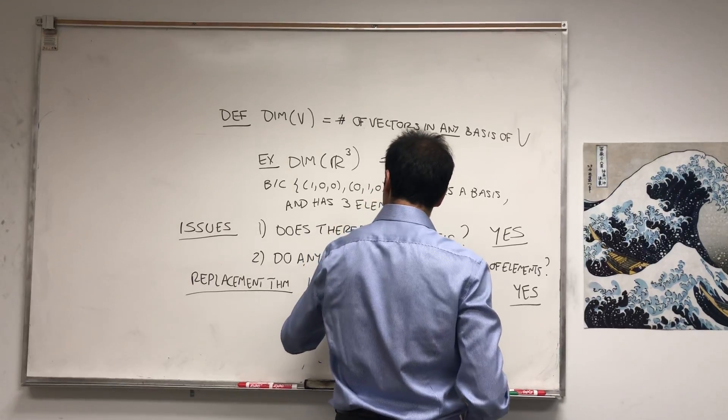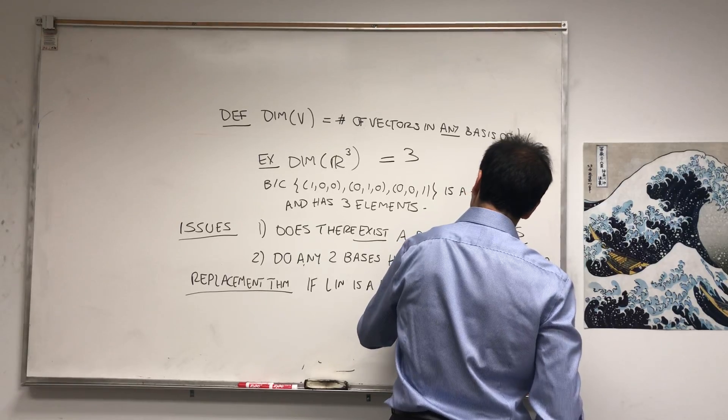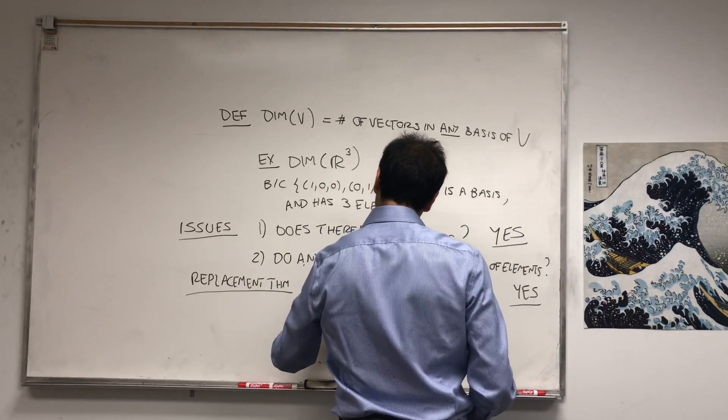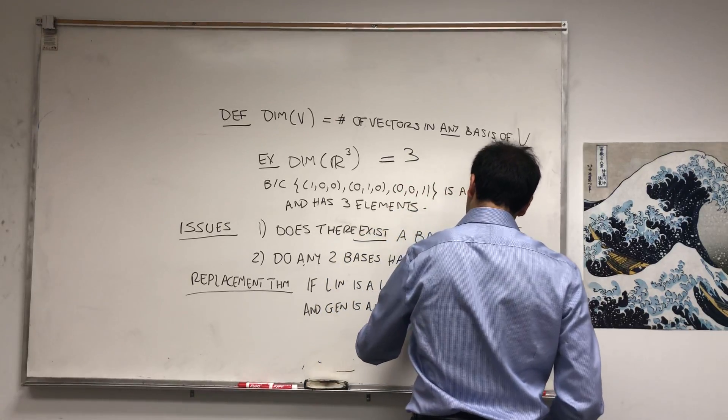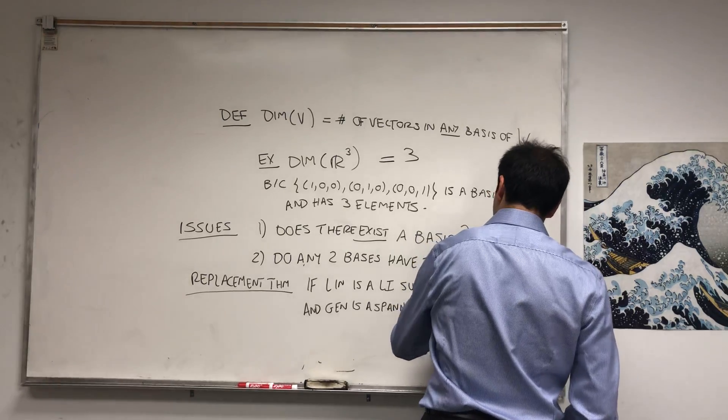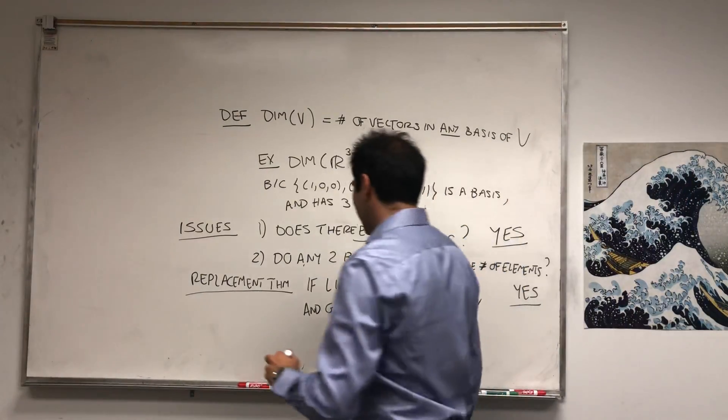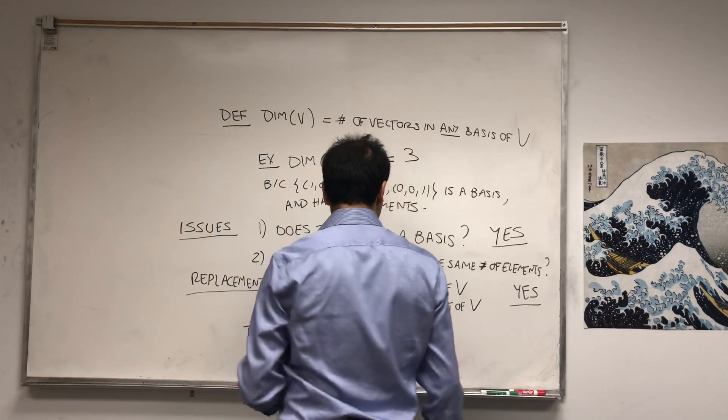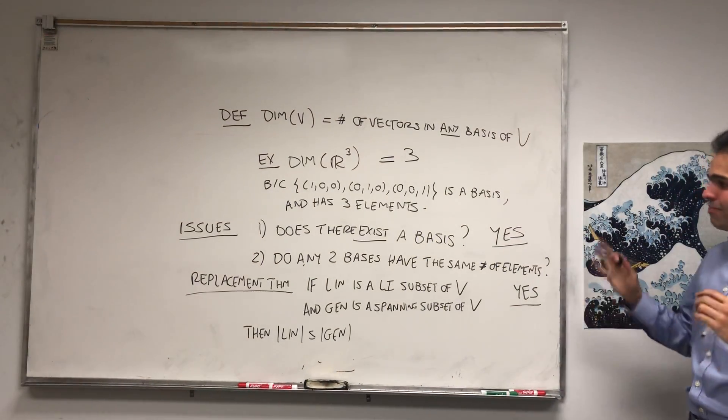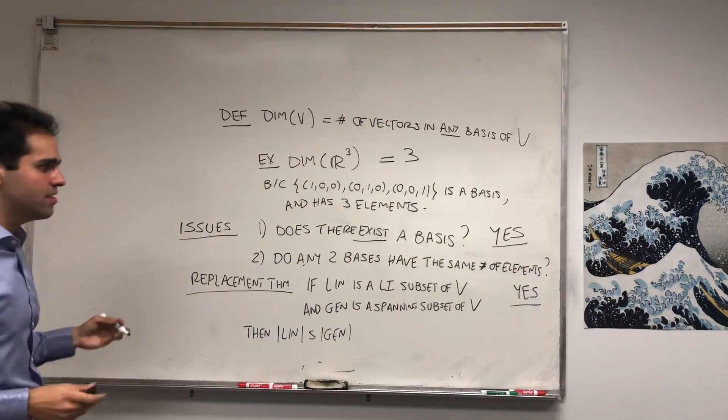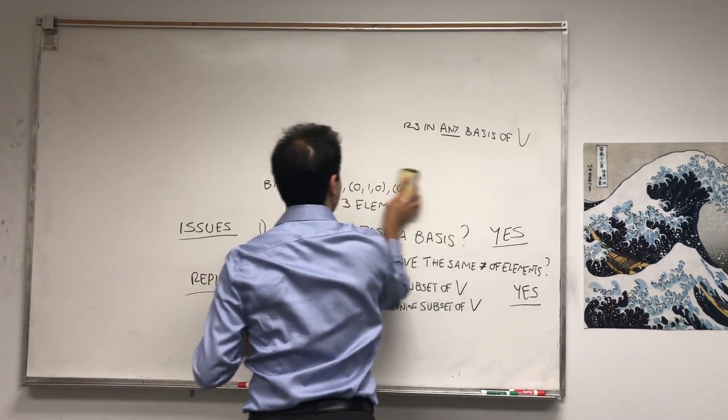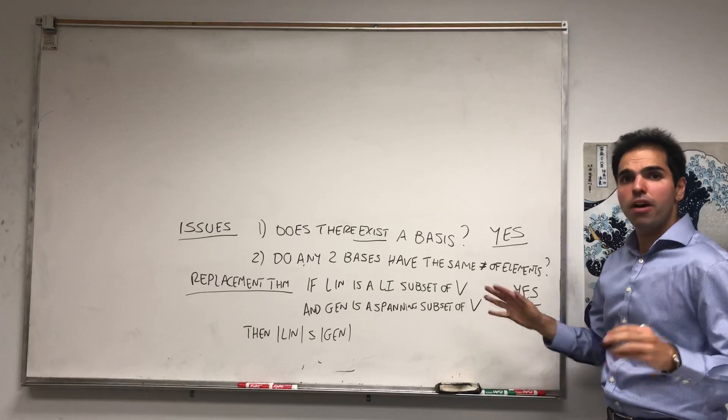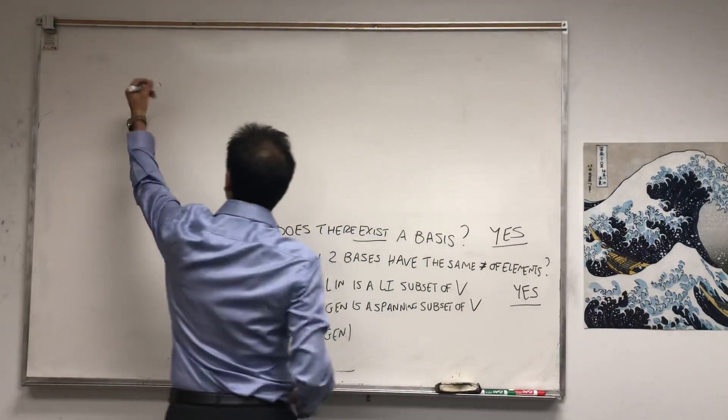Namely, if lin is a linearly independent finite subset of V, and gen is a spanning subset - so a set which spans V - then it turns out any linearly independent subset is always smaller than a generating subset. Then |lin| ≤ |gen|. And this is really the core of our dimension, because how do we show that two bases have the same number of elements?